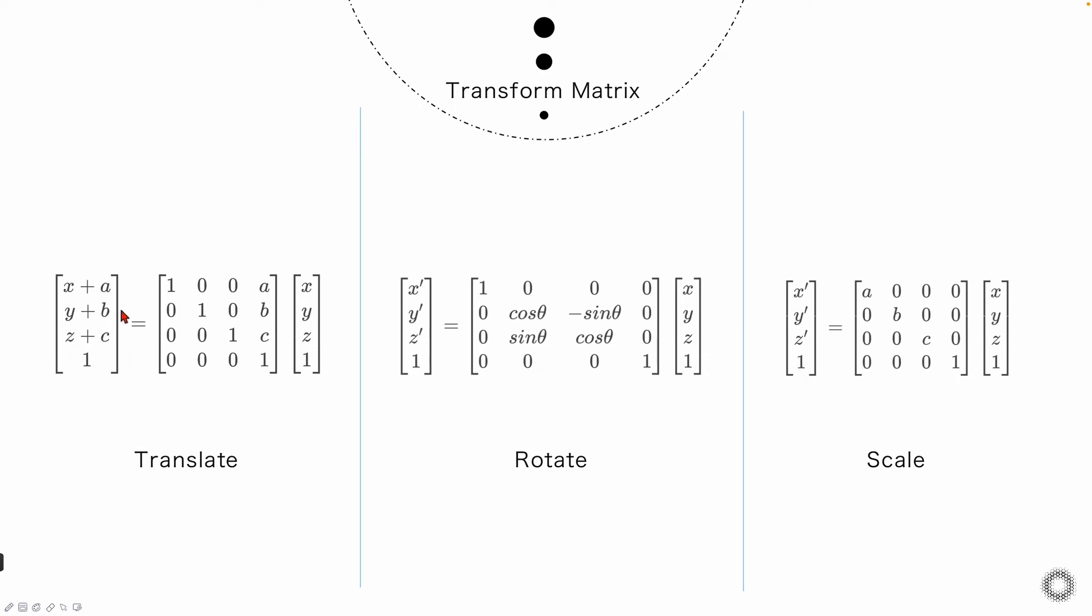The first matrix, if a coordinate is multiplied by this one, we can move x, y, z coordinates by a, b, c individually. If multiplied by this second matrix, we can get the result of the coordinate rotating theta degrees around the x-axis. If multiplied by the last matrix, we can zoom the x, y, z by a, b, c individually. Through transformation matrix, we can convert complex geometric relationships into algebraic relationships, which is very convenient for us to do the calculation and processing. And we also have very helpful math libraries to help us generate these corresponding matrices and perform the matrix calculation.